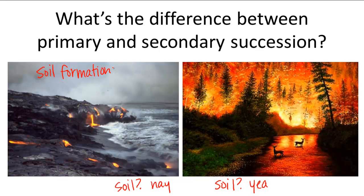Those are just two random examples. And the first organisms to colonize the area are called pioneer organisms. This makes sense — pioneers are the first types of people to colonize an area. So pioneer organisms are the first organisms to colonize a destroyed land or a newly formed land.